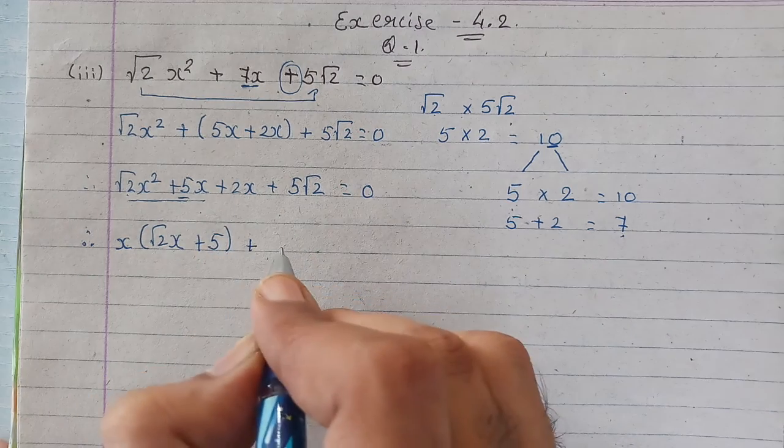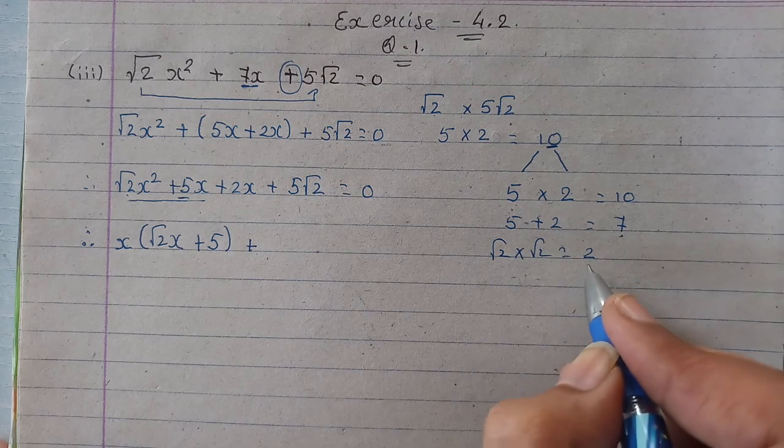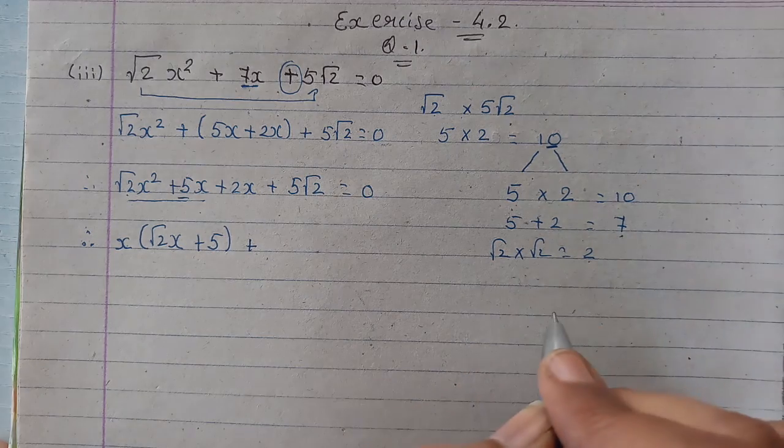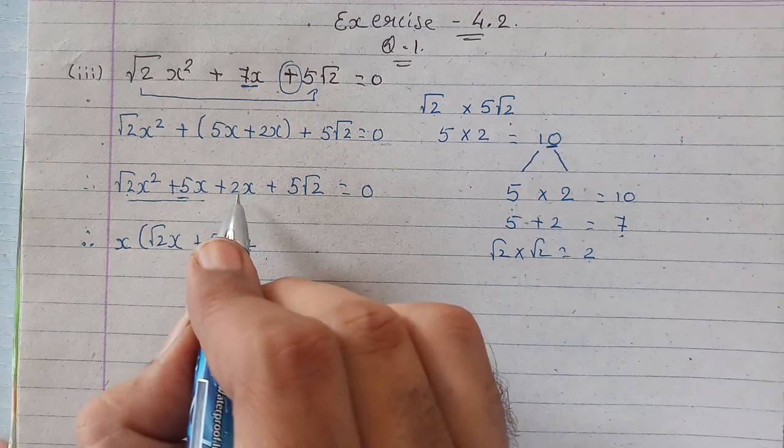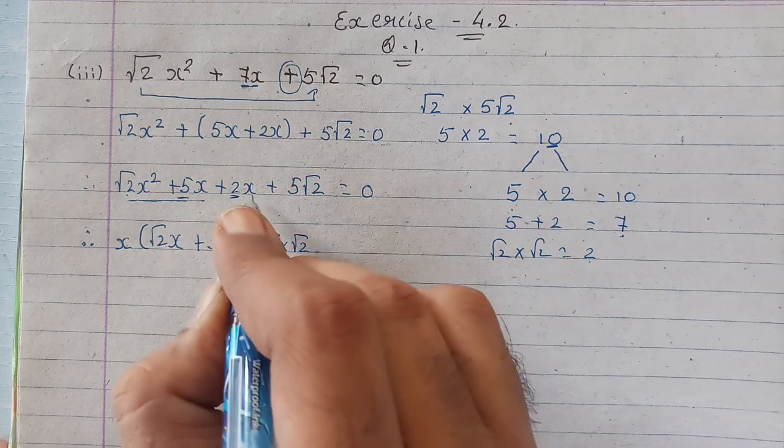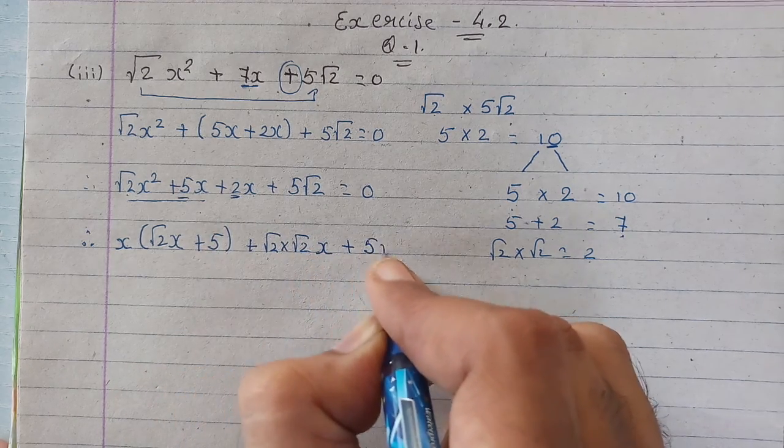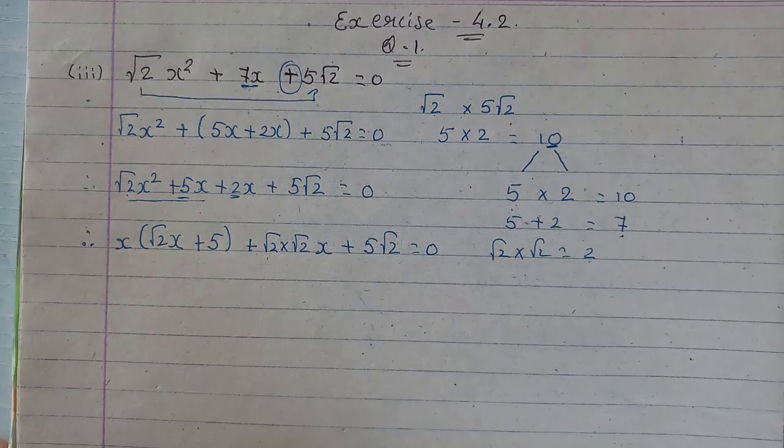Now see, we know that root 2 multiply root 2 equals 2. That means in place of 2, we can write root 2 multiply root 2. So in place of this 2, we'll write root 2 multiply root 2. And this x which is there will remain as it is, plus 5 root 2 is equal to 0.